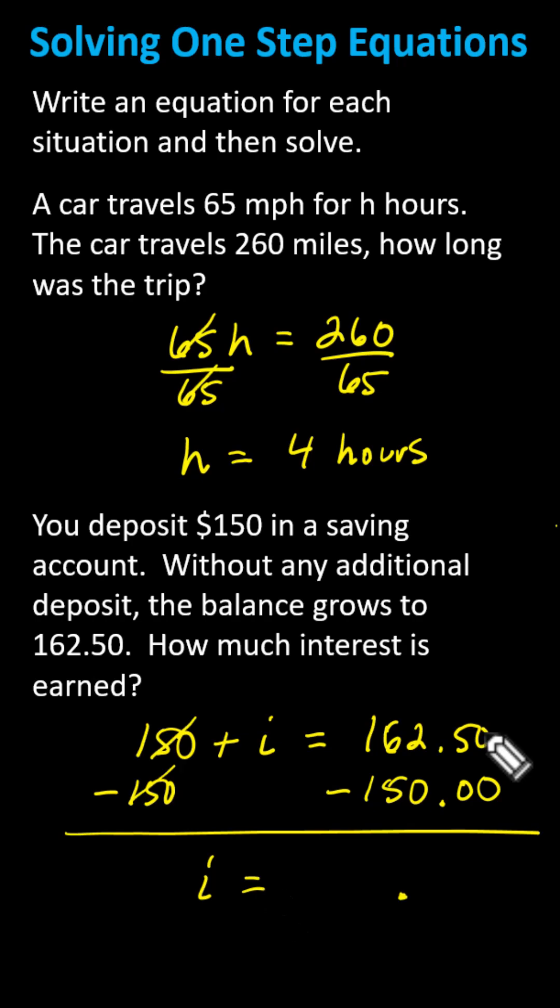Subtracting on the right, zero minus zero is zero, five minus zero is five, 162 minus 150 is 12. The interest earned was $12.50.